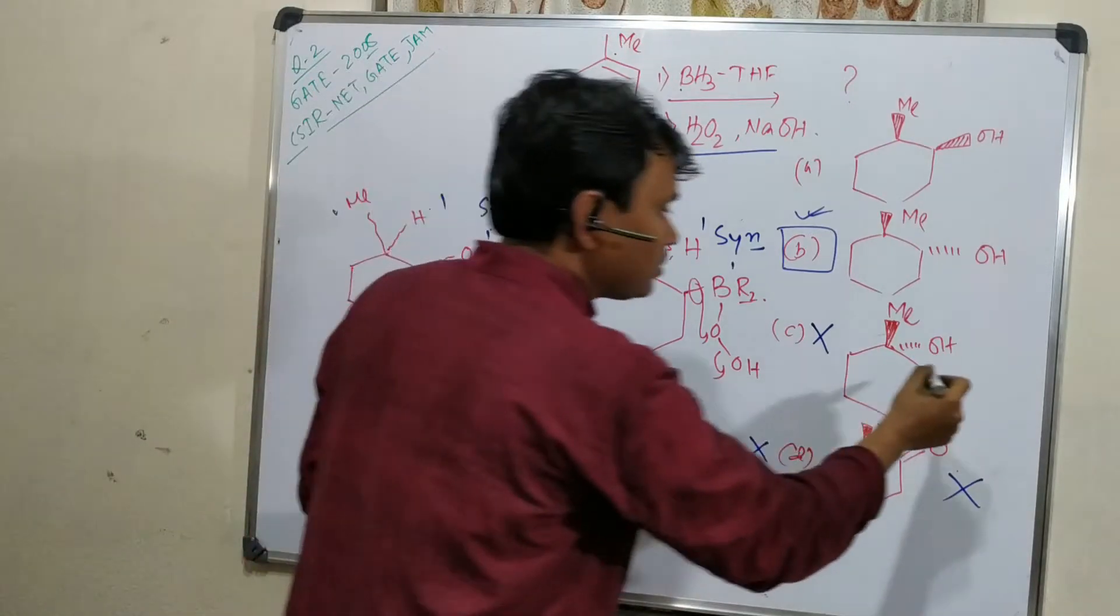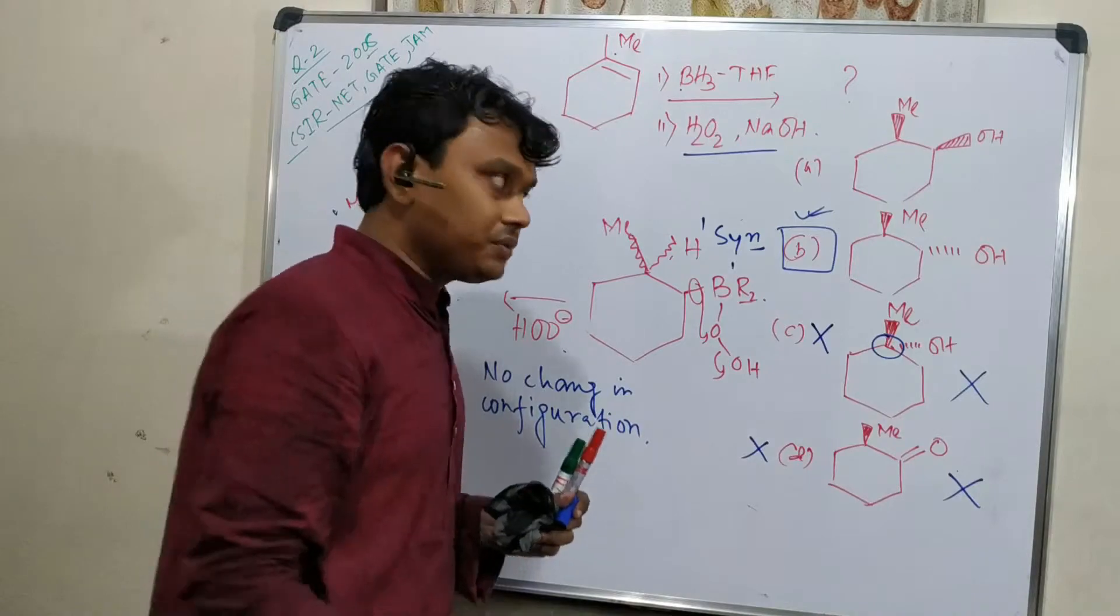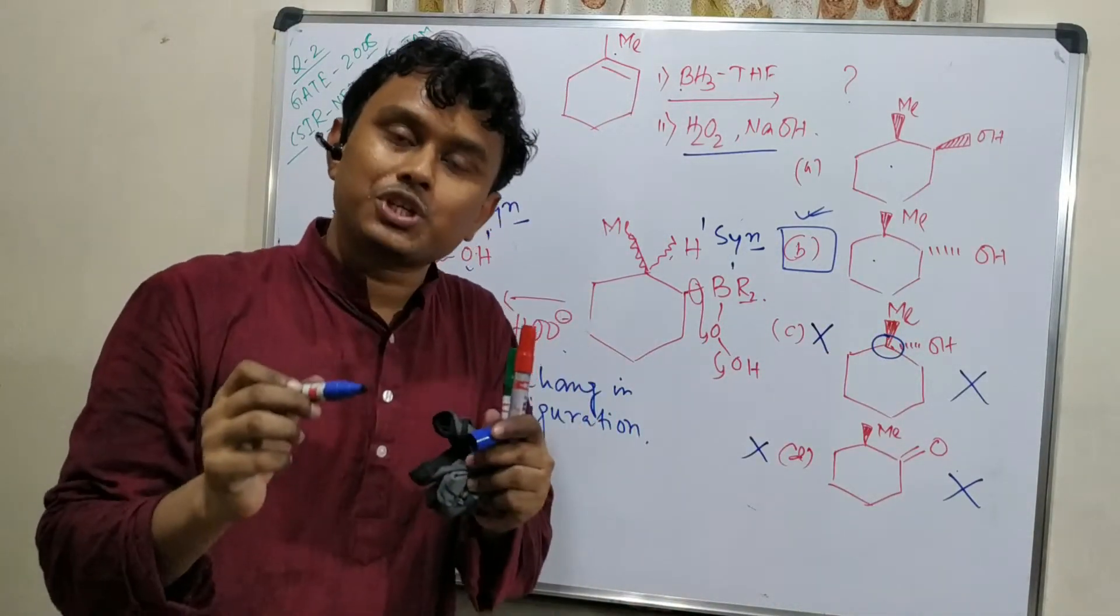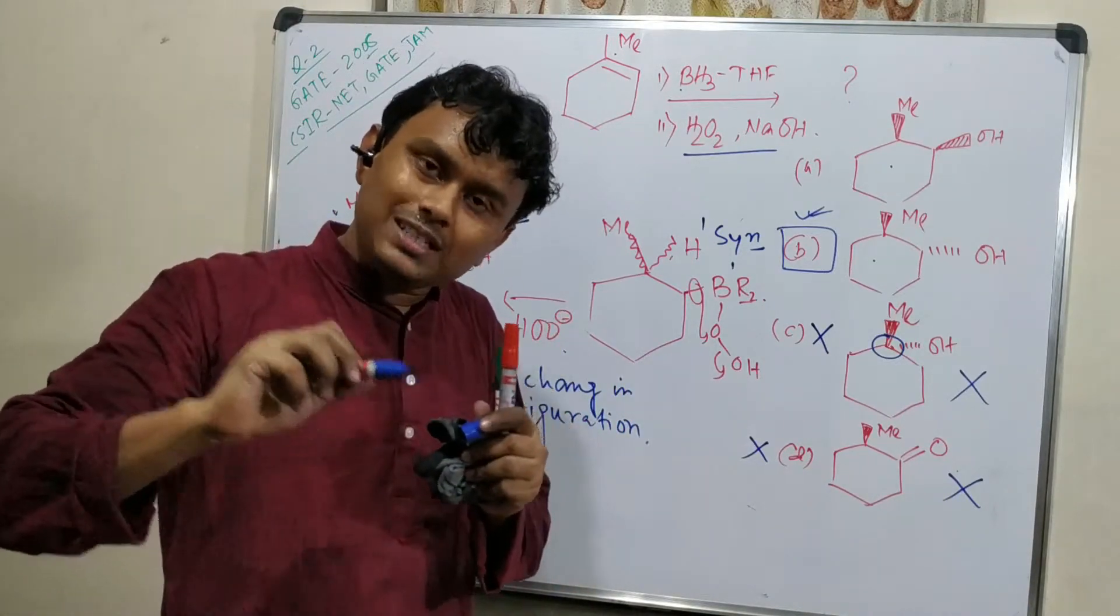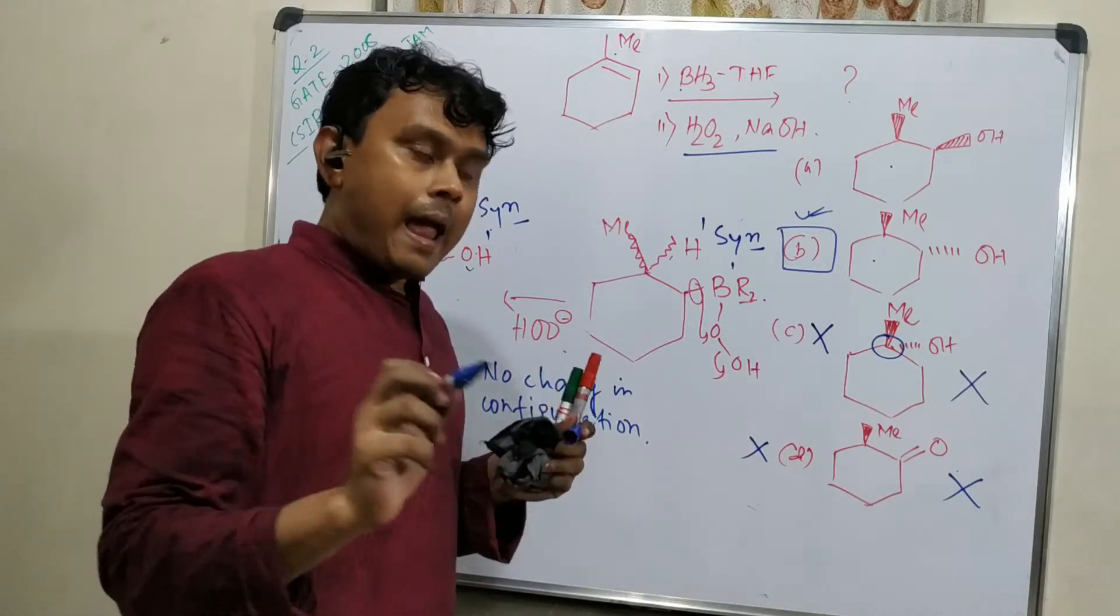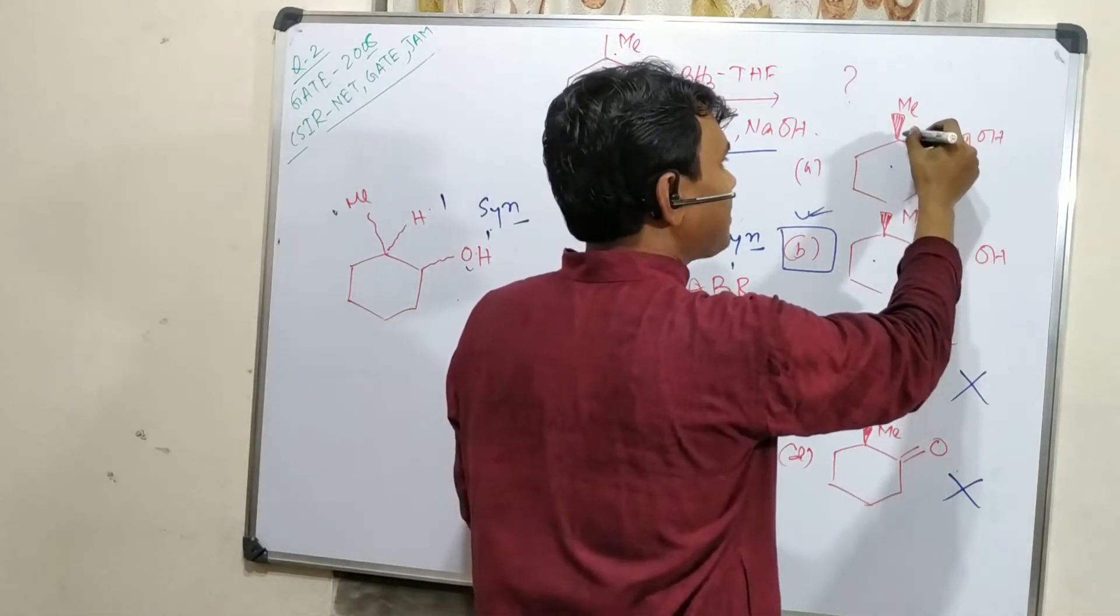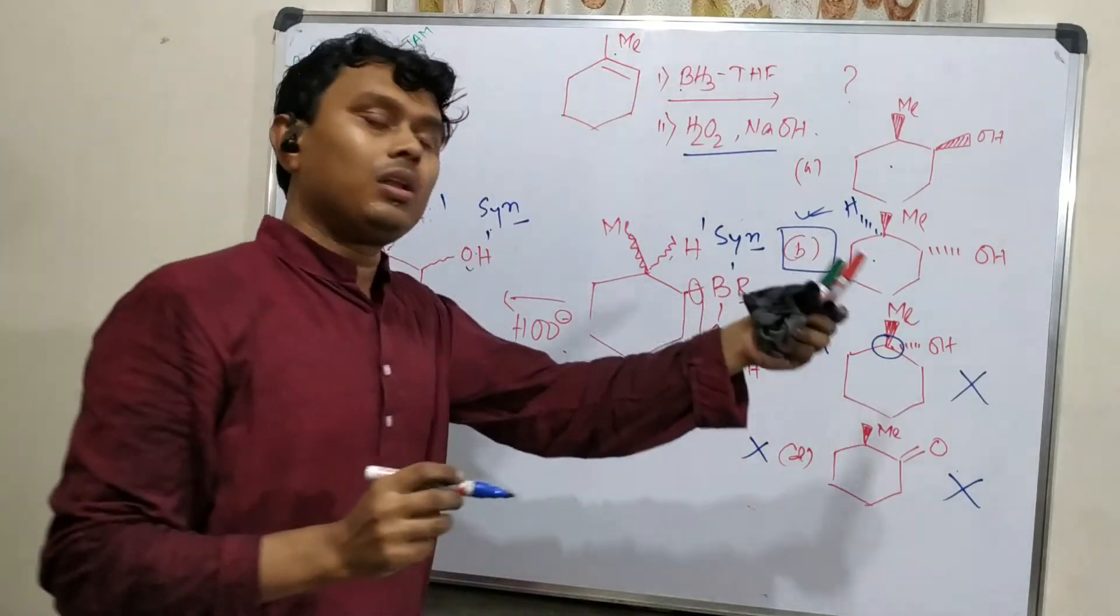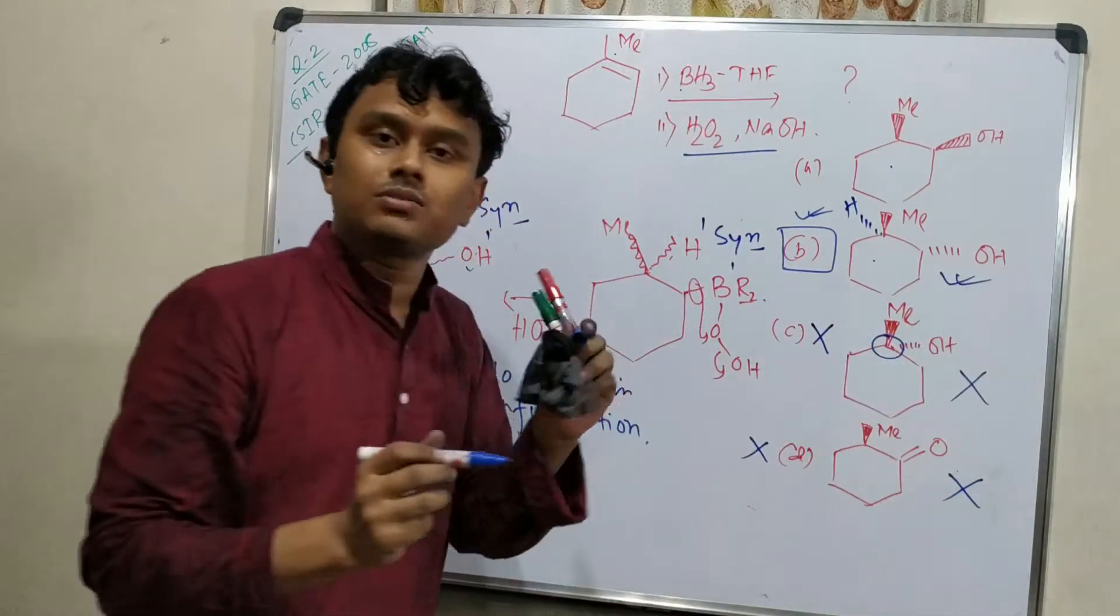Initially this is off. Secondly, boron prefers to attach on the less hindered side. This is the more hindered side, so this is off. Now the main confusion arises between these two, and we know that hydroboration is syn addition. Syn addition means ultimately where boron is attached, similarly oxygen will attach, meaning alcohol. So if methyl is above, then hydrogen is below, and alcohol and hydrogen should be syn. So this is the answer. Within 30 seconds you can solve this question.